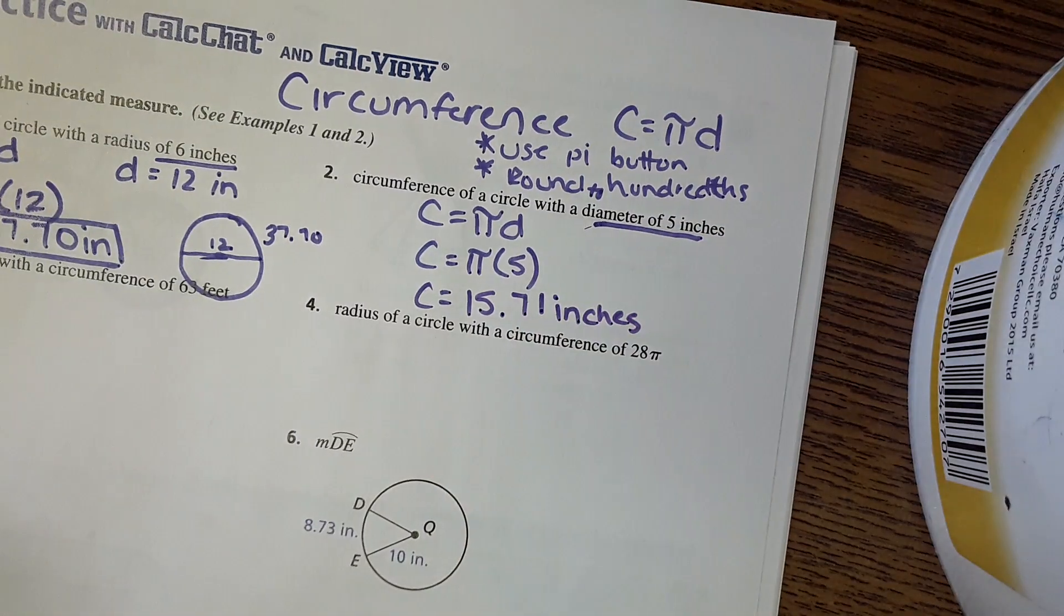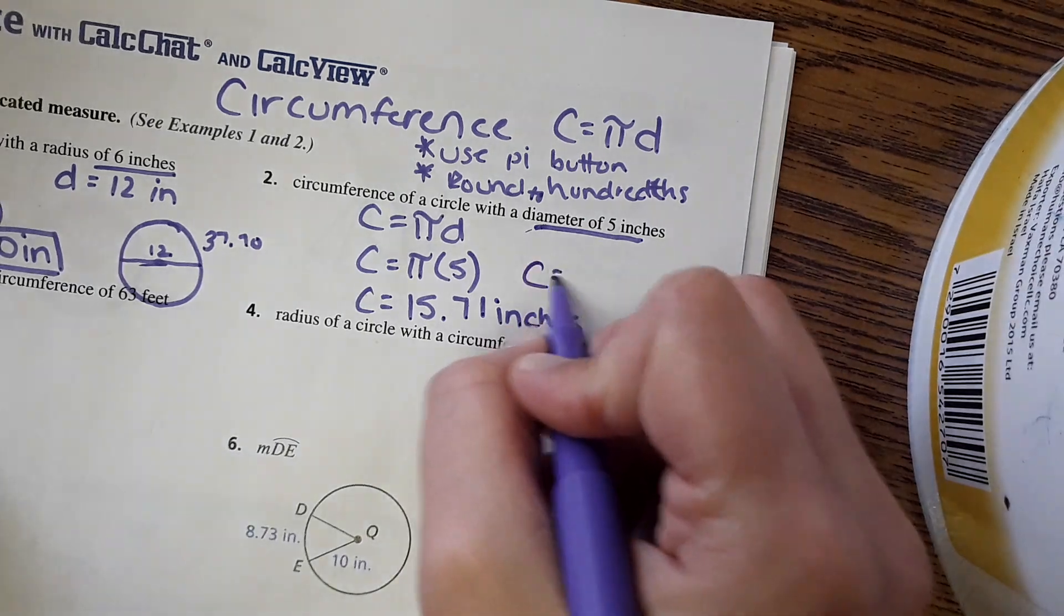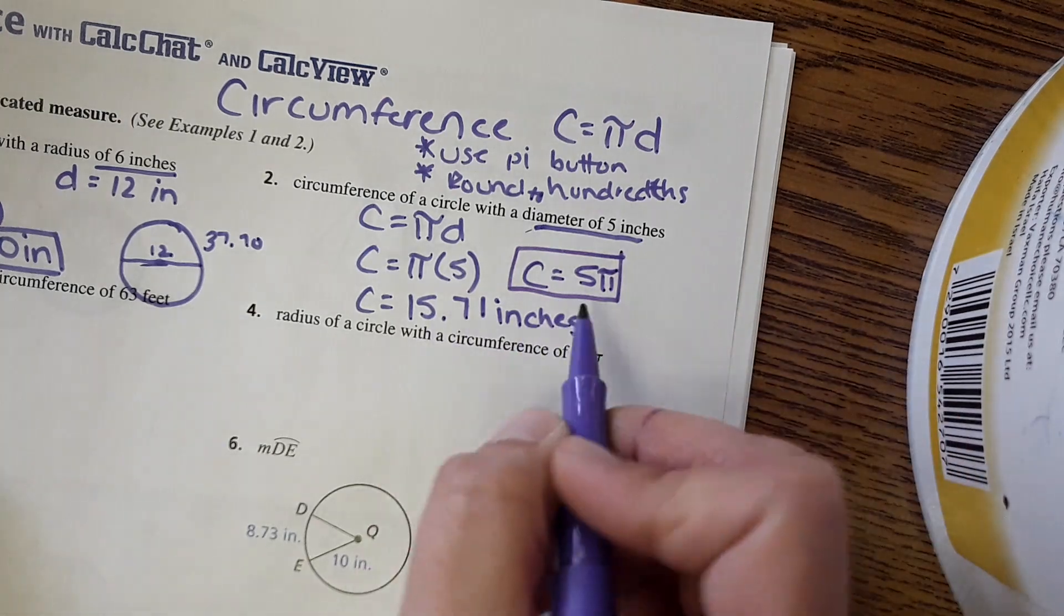And if they were asking for the answer in terms of pi, all you would have to do is say okay, circumference equals five pi and you're done. It's actually an easier way to answer it.